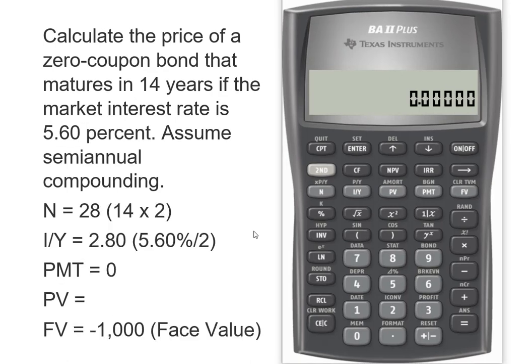Now that we have all our stuff together, just make sure you cleared your time value money keys, and we're going to start. So I have 28 periods for my N. My interest rate is 2.80%. My payment is zero. I have a future value of a negative $1,000, and now I want to compute my present value.